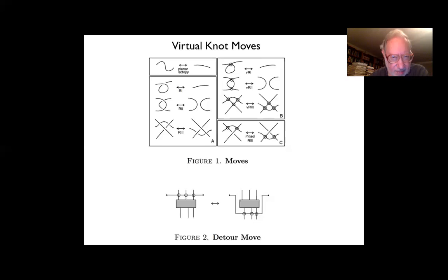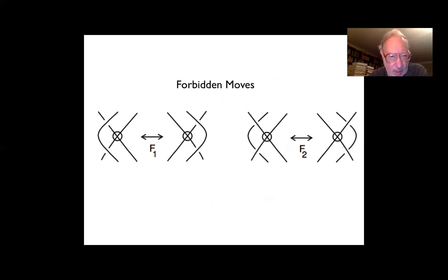Some moves are not allowed. You're not allowed what looks like a Reidemeister three move where a classical arc goes across a virtual crossing, over or under. If you add only one of them, you get an interesting theory — adding over but not under is called welded knot theory, going back to Rourke, Fenn, and Remiani. If you add both, Sam Nelson and the Kamadas proved long ago that would unknot knots.